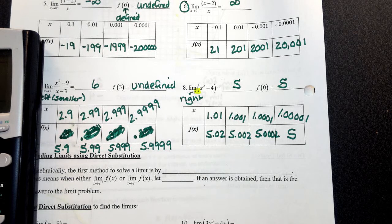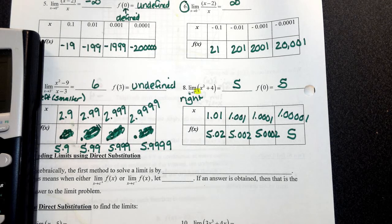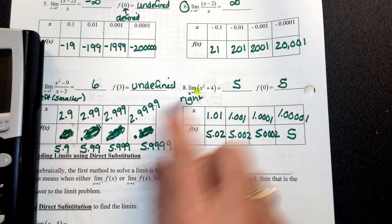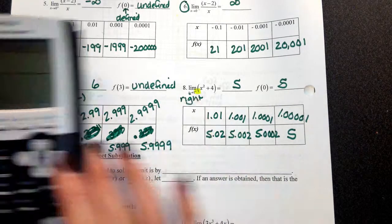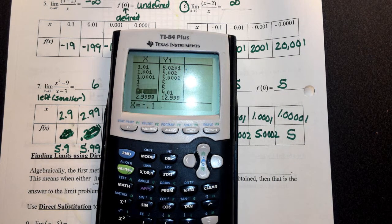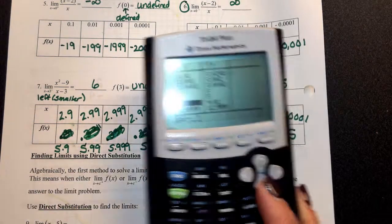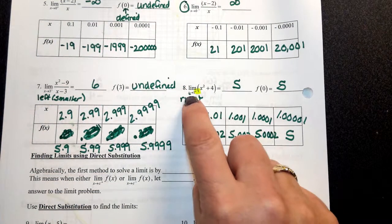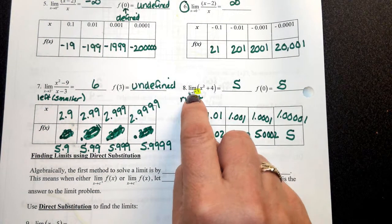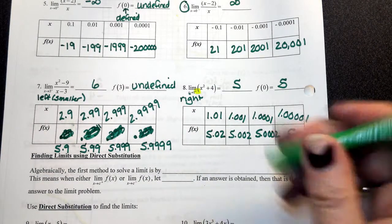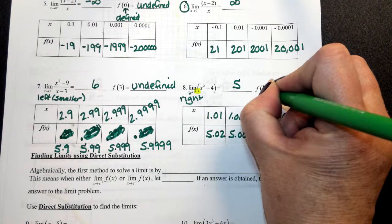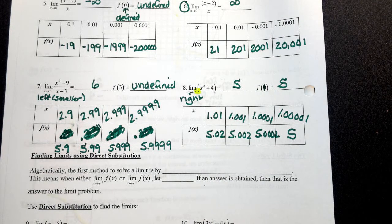The limit here is getting really close to 5, and that's also the same as the defined value. So you do have cases where the limit equals the defined value. If you plug in a 1, you should get a 5. Note: there's a typo on the paper — that should be a 1.